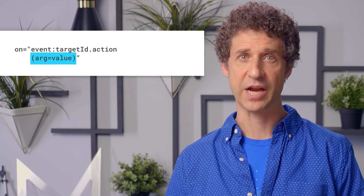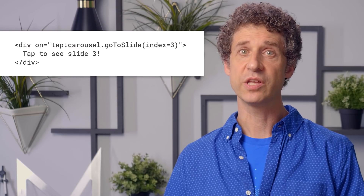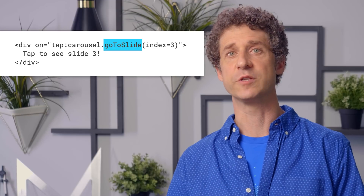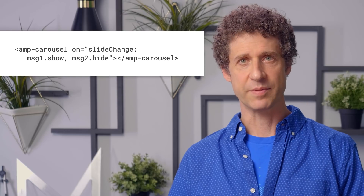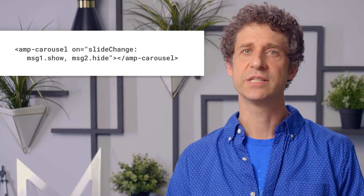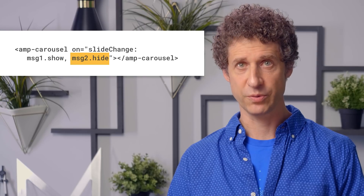It can get more elaborate if you want. Some actions take arguments. To include arguments, simply enclose their names and values in parentheses after the action name, just as you'd expect. Separate multiple arguments with a comma. For example, if you've created an image carousel using AMP carousel, you can use the goToSlide action to advance the carousel to a specific slide. Specify which slide with an argument named index. You can take multiple actions by separating them with commas. In this image carousel, when the slide changes, message one gets shown and message two gets hidden.